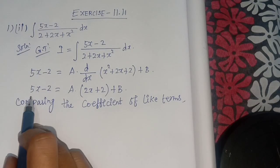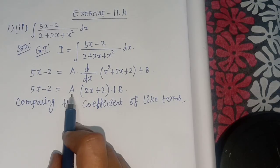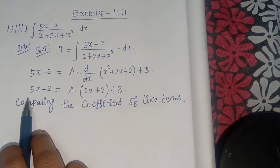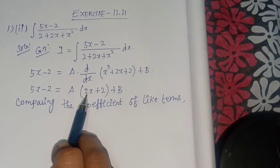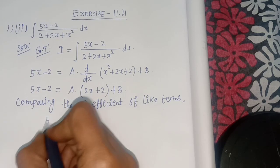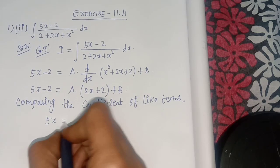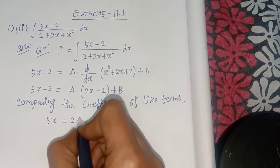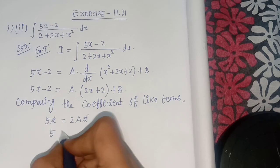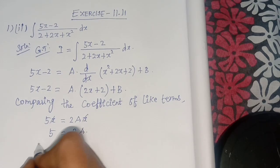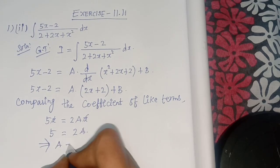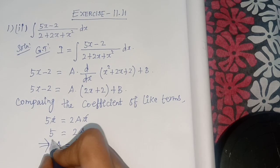Comparing the coefficient of x: 5x equals A times 2x, so 5x equals 2ax. Cancelling x from both sides, 5 equals 2a, which implies a equals 5 divided by 2.